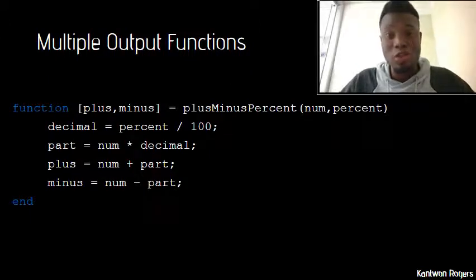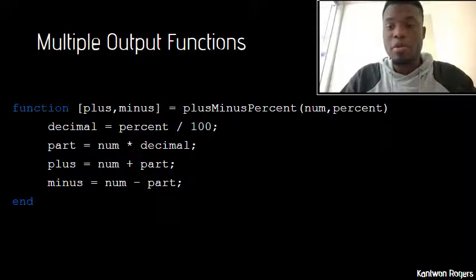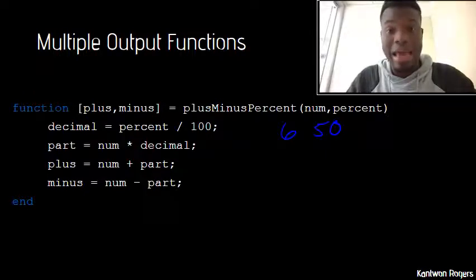So now let's talk about functions with multiple outputs. So I have an example here of a function called plusMinusPercent and this function takes in a number and takes in a percentage and it has two outputs. The first output will be the original number plus a certain percentage of that number and the second output will be the original number minus a certain percentage of that number. So for example, let's say my inputs were six and fifty percent. So my first output should be nine and my second output should be three because half of six is three.